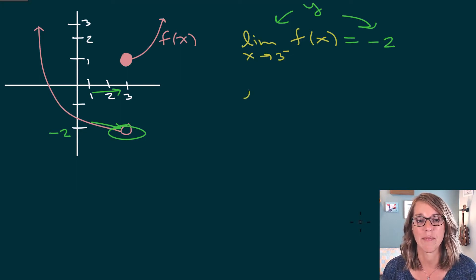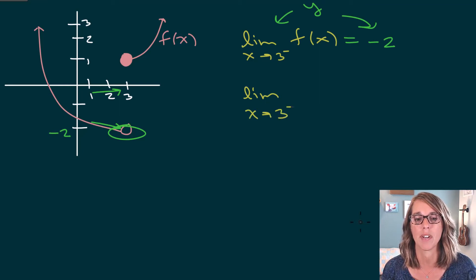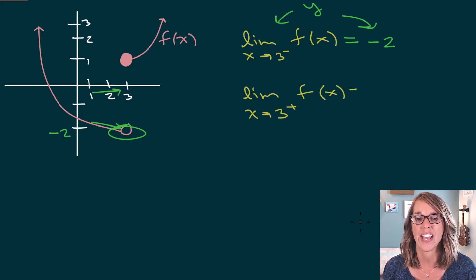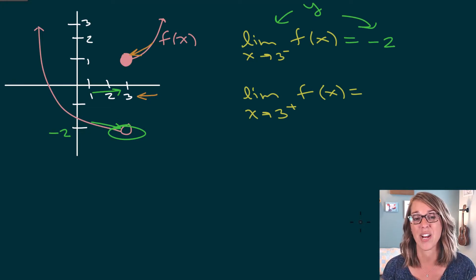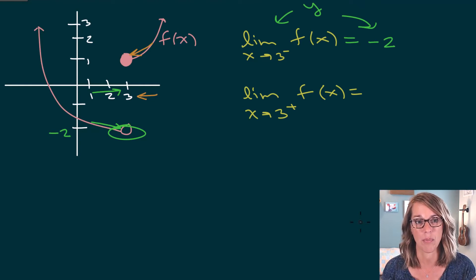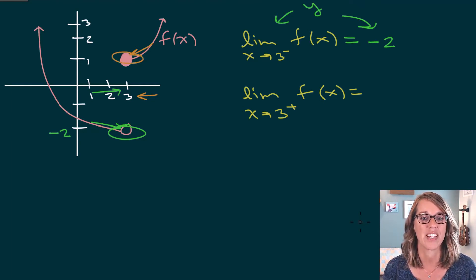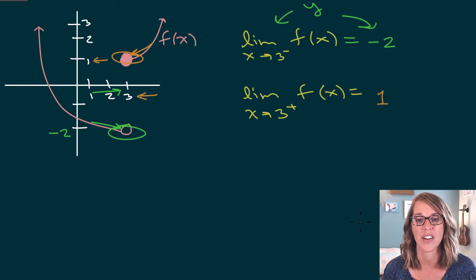Next, let's look at the limit from the right — the limit as x approaches 3 from the right, with a superscript plus sign, of f of x. I am looking for the behavior of the y value, but this time I'm approaching 3 from the right-hand side. I'm coming down to this closed circle. I don't care what's happening at 3; I just care about the y value that we're approaching, which is 1.